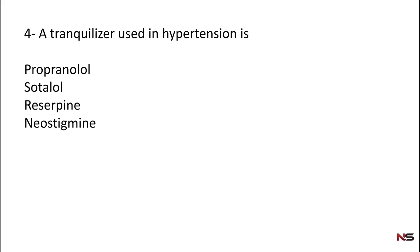Question number 4: which tranquilizer is used in hypertension? Options are: propranolol, sotalol, reserpine, neostigmine. The correct answer is reserpine. Reserpine is a tranquilizer which is also used in hypertension.